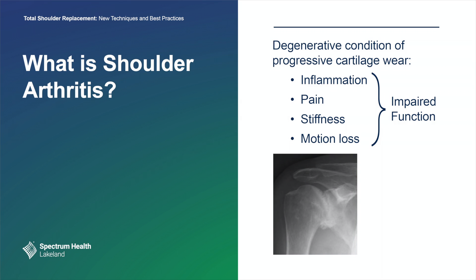What exactly is shoulder arthritis? Shoulder arthritis is basically a degenerative condition that involves a loss of cartilage over bone so that the bones rub on one another. You wear cartilage off the ball and cartilage off the socket. Basically, this results in inflammation, pain, stiffness, and motion loss, and ultimately results in impairment of function.